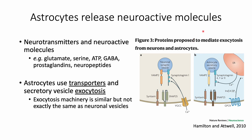In addition to glutamine, astrocytes can also release neurotransmitters such as GABA and glutamate, and neuroactive molecules such as ATP, prostaglandins, and neuropeptides. Astrocytes use two main methods of release: transporters and exocytosis.